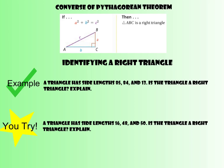So now we have to talk about the converse of Pythagorean theorem. All that's saying is if you have this formula holding true, A squared plus B squared equals C squared, then you know it has to be a right triangle. So this first question says a triangle has lengths 85, 84, and 13. Is the triangle a right triangle? And explain.